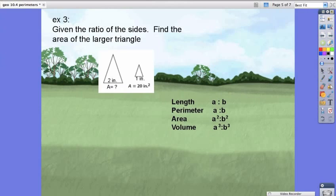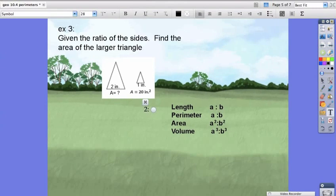So again, using this table to assist us, we know that the ratio in the sides is 2 to 1. That means the ratio in their areas should be 4 to 1.